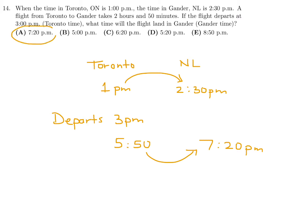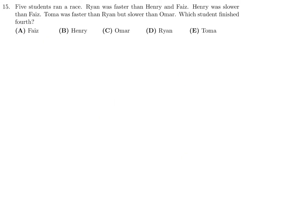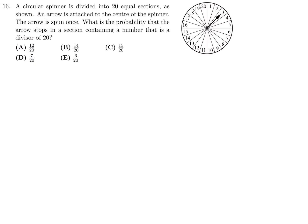Number 14, therefore the answer is A. Five students ran a race: Ryan was faster than Henry and Faze; Henry was slower than Faze; Toma was faster than Ryan but slower than Omar. Which student finished fourth? Ryan is faster than Henry and Faze. Henry is slower than Faze. Toma is faster than Ryan, who was faster than Faze, who's faster than Henry. So this is the combination of all the information. This is obviously the winner, second, third, fourth. So fourth is Faze.